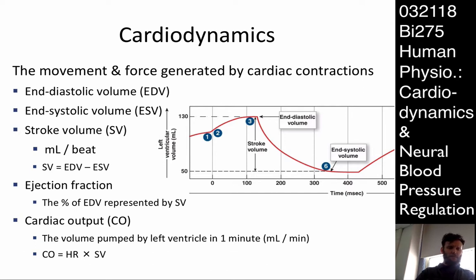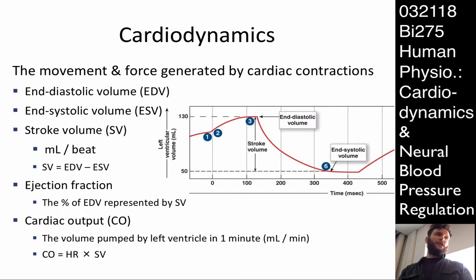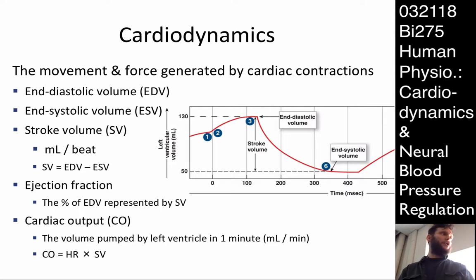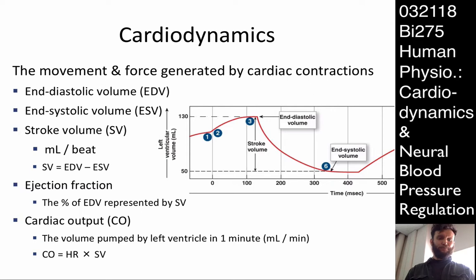Cardiac output is a number that represents the amount of blood the heart is able to push out per unit of time. It's a function of both stroke volume and heart rate — how quickly is your heart able to beat? It's simply the product of your heart rate and your stroke volume: milliliters per beat times beats per minute gives you milliliters per minute.